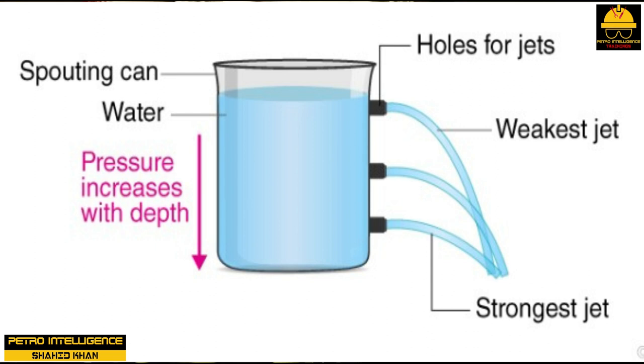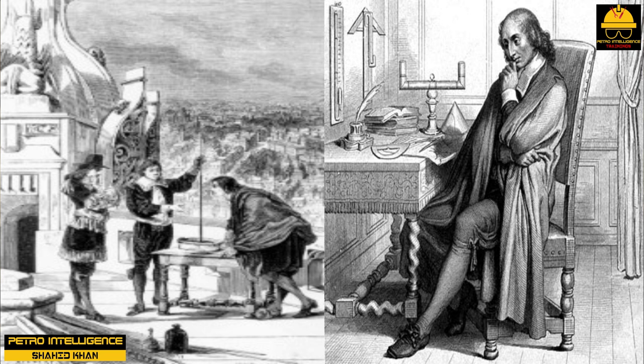Pascal, a French scientist, discovered in the 1650s that pressure in fluids is transmitted equally in all directions. From this, Pascal formulated Pascal's Law, which states that in a fluid at rest in a closed container, a pressure change in one part is transmitted without loss to every portion of the fluid. Fluids act this way because molecules move about freely; the distance between molecules depends on whether they are in solid, liquid, or gas states.